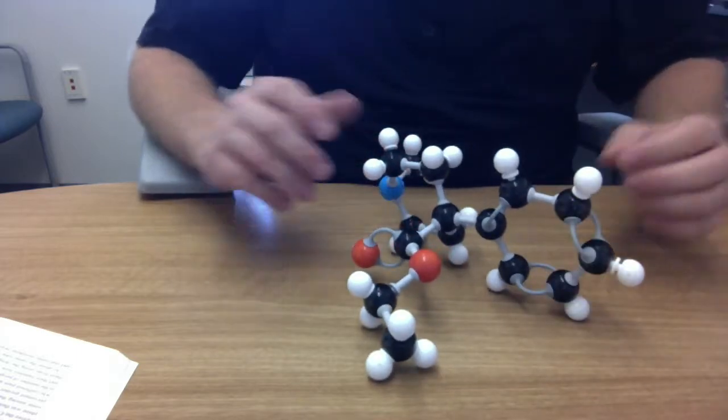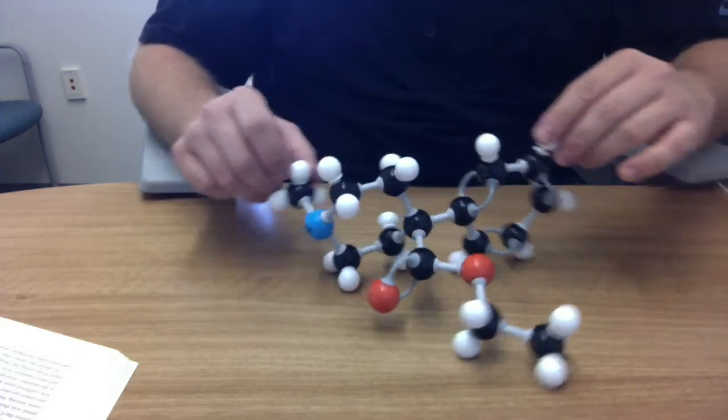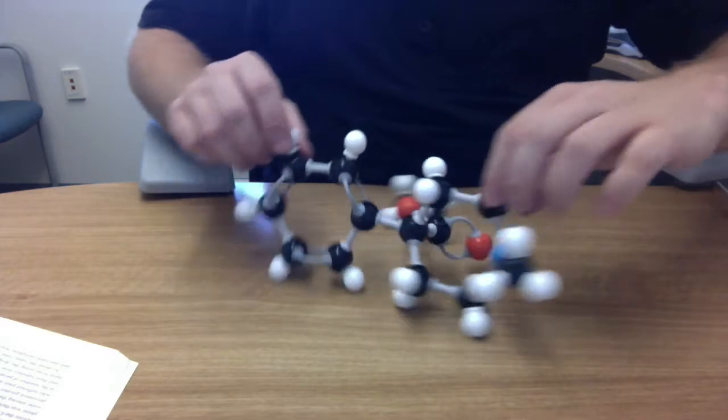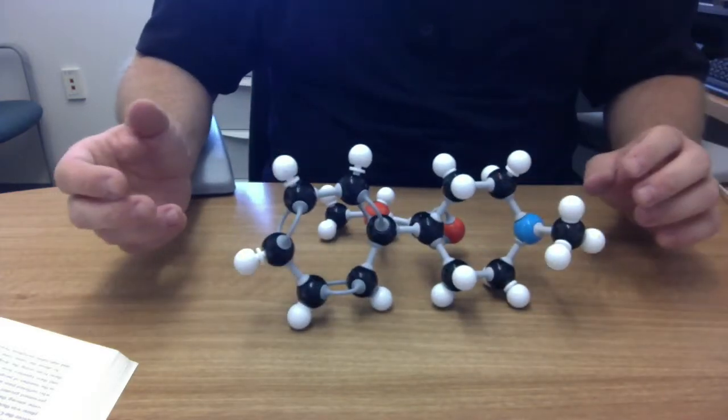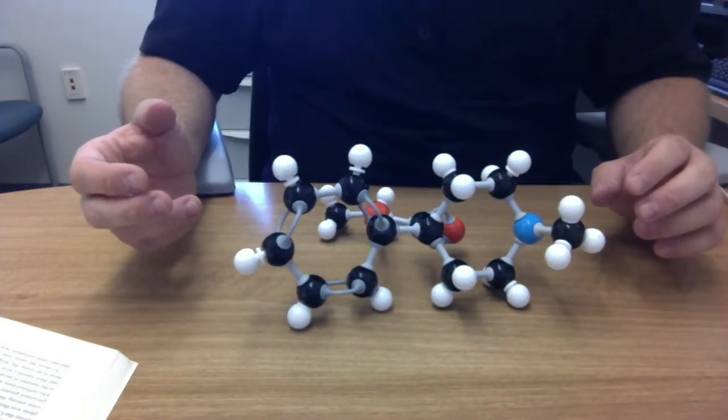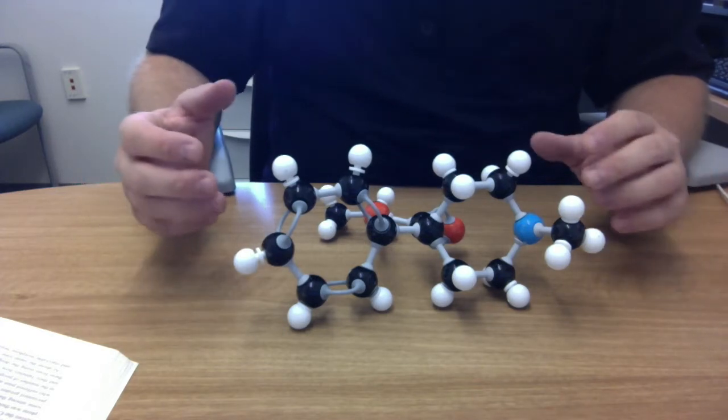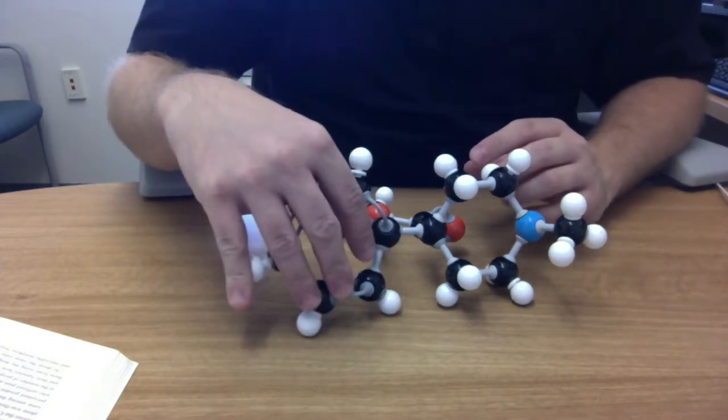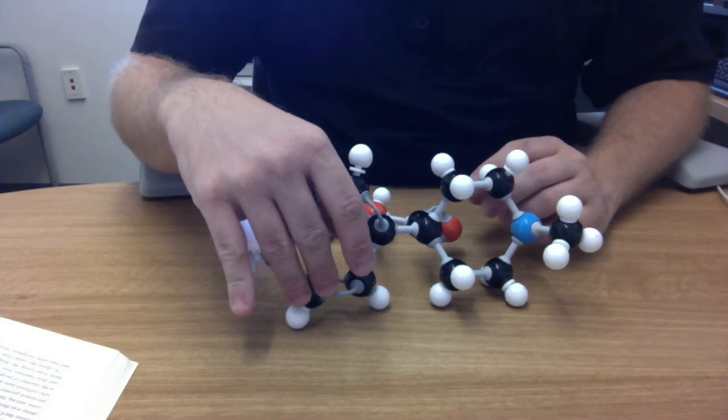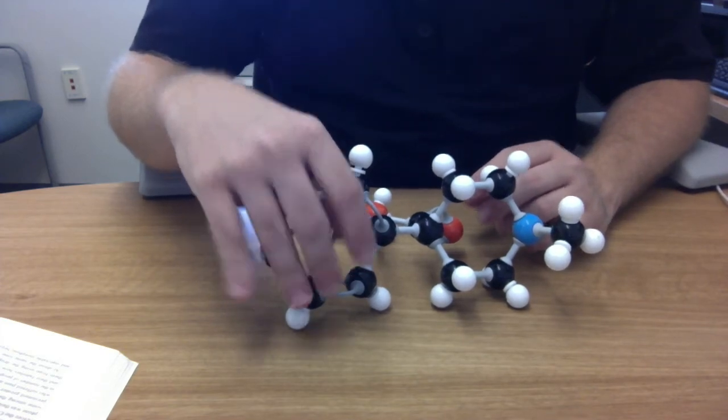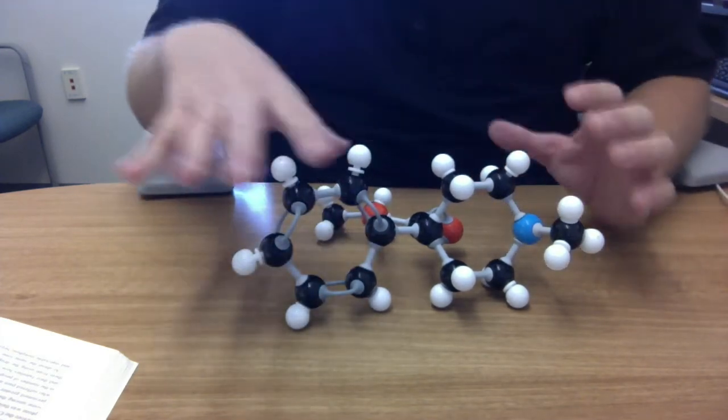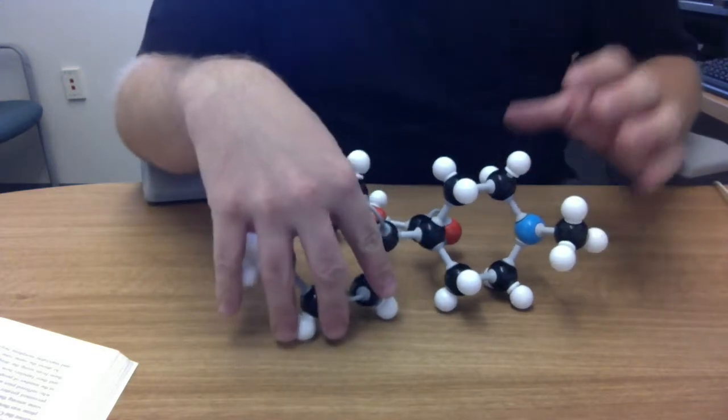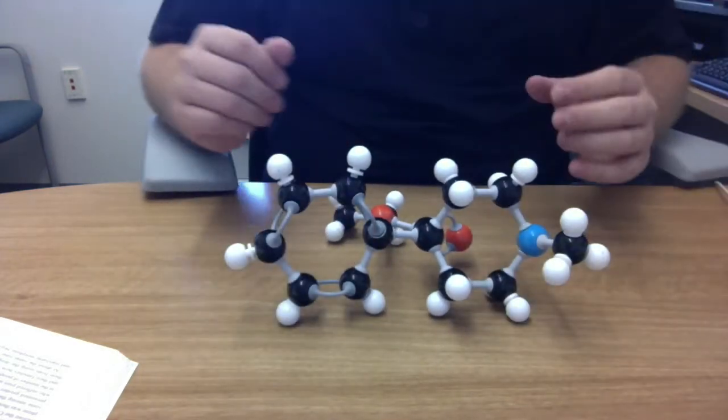Meperidine is a synthetic narcotic or an opioid. It is also an open ring structure, just like methadone. But remember, methadone actually had two aromatic rings in its open structure. Whereas meperidine or Demerol has one aromatic ring and a non-aromatic ring.